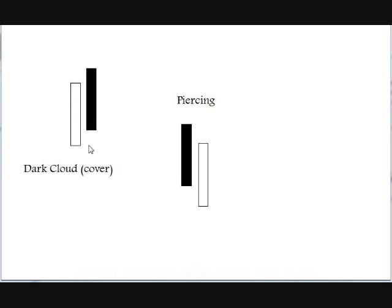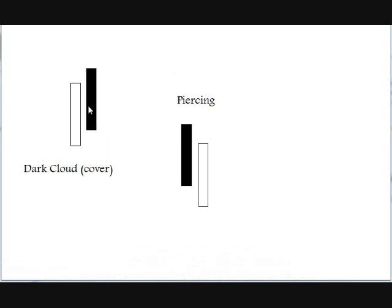Of course, if it closes beneath this candle entirely — what if it closed all the way down? We would have a bearish engulfing. So it's not quite a bearish engulfing, but it is a dark cloud cover. If it's halfway down, it's almost the same as a bearish engulfing — it's over halfway down. The farther down it is, the more bearish it is, the stronger the reversal.